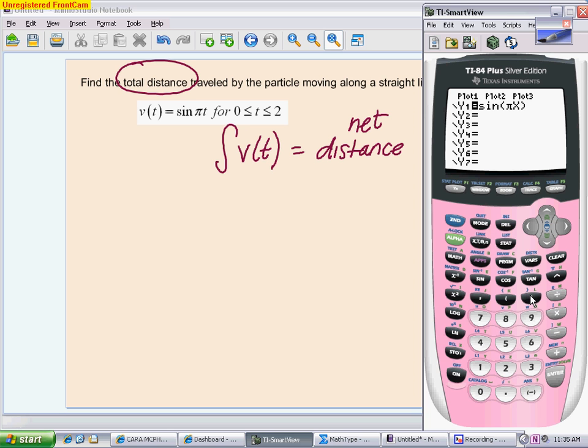The sine of pi x. And instead of hit graph, I'm going to change my window. A couple reasons. First of all, I want to make sure I'm only looking at the time interval that's given. It only wants to know from 0 to 2, so I am going to switch it from 0 to 2. And the other thing I'm going to do is I'm going to change my y, because I don't want to look at anything that's going on really far. I really only care about the x-axis.